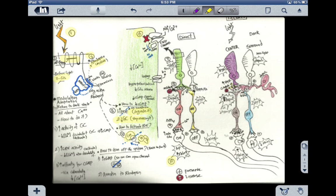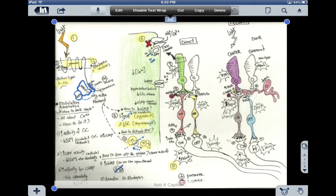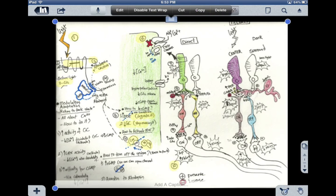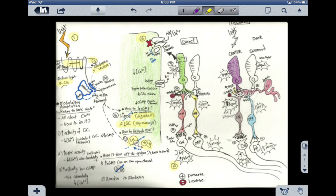As you can see at number 6, cyclic GMP is necessary for the channel that allows sodium and calcium to enter the photoreceptor cell. By degrading cyclic GMP here, we're actually stopping sodium and calcium from entering.